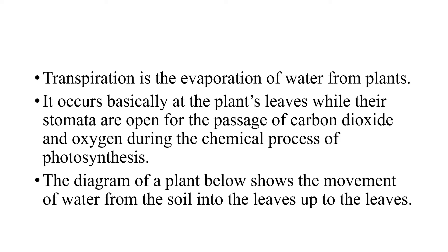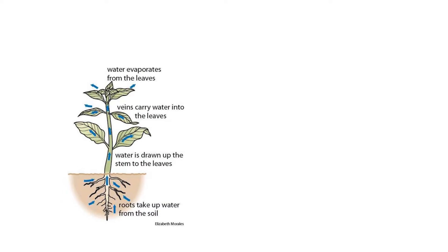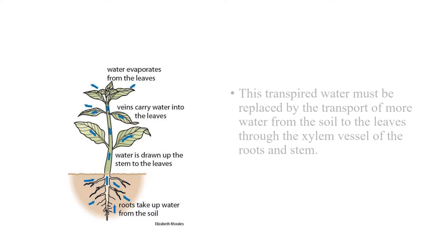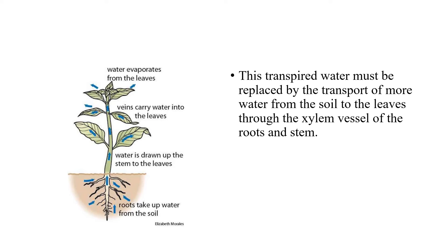The diagram of a plant below shows the movement of water from the soil into the leaves. This transpired water must be replaced by the transport of more water from the soil to the leaves through the xylem vessels of the roots and stem.